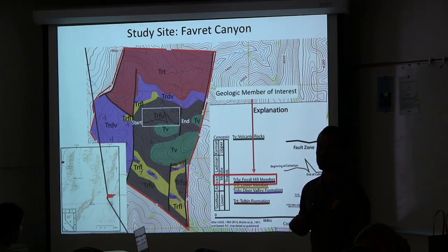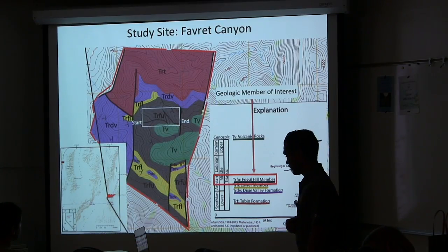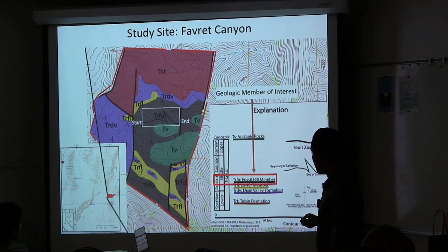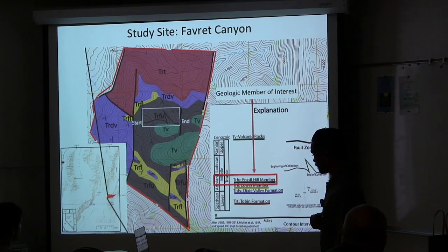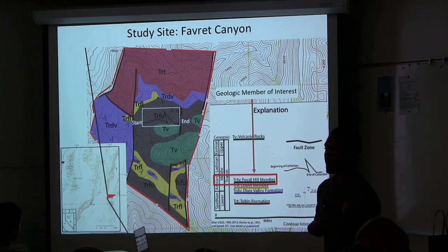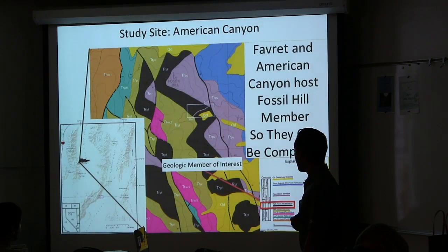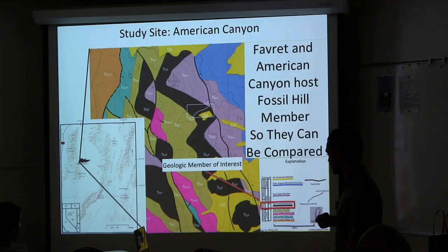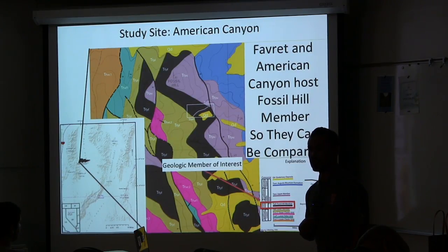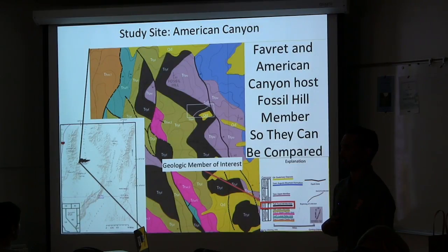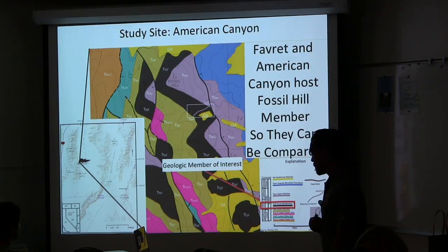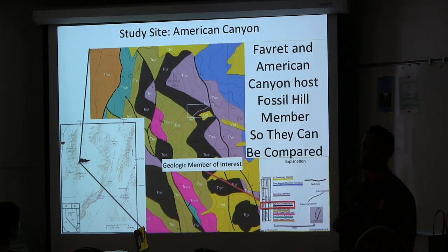Biostratigraphic work was used to help date these rocks. Fabric Canyon records the Fossil Hill Member, aged to be Illyrian, a sub-stage of the Anisian within the Middle Triassic. Nichols and Silberling 1977 and Lucas et al. 2007 described sedimentology as fossiliferous limestone interbedded with shale. American Canyon also records the Fossil Hill Member, described as homogenous limestone with horizons of siltstone and sand. Both Favrit and American Canyon recording the Fossil Hill Member establishes the possibility of comparing the two locations.